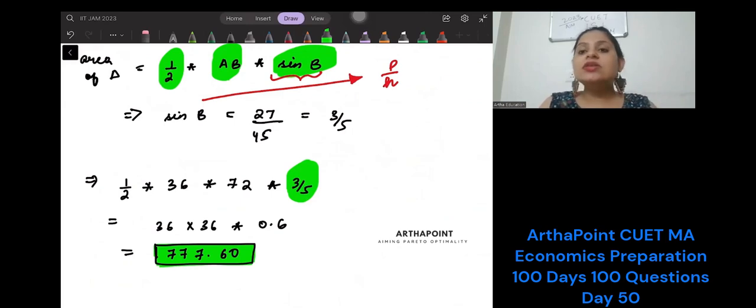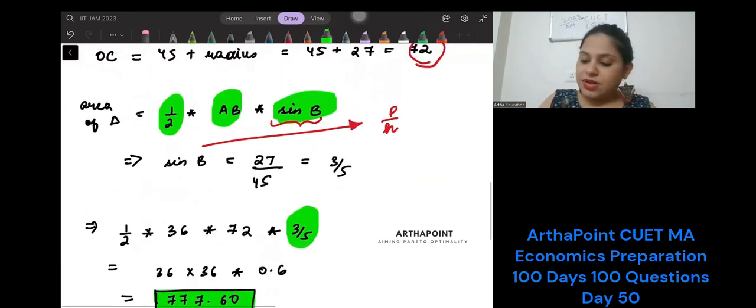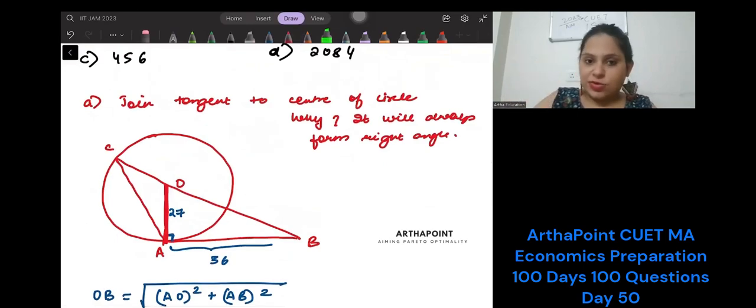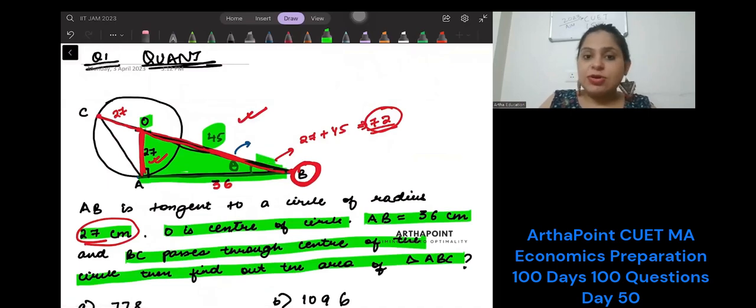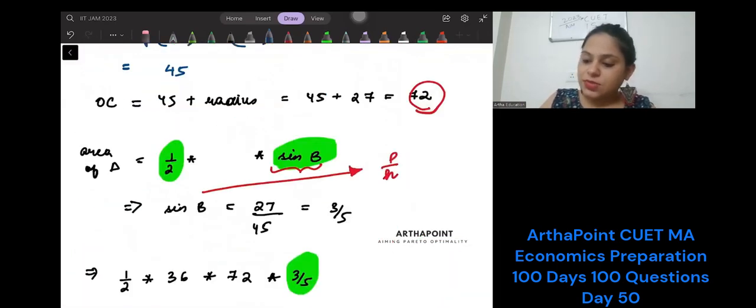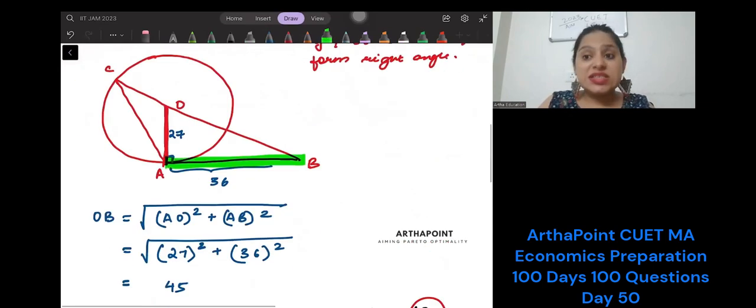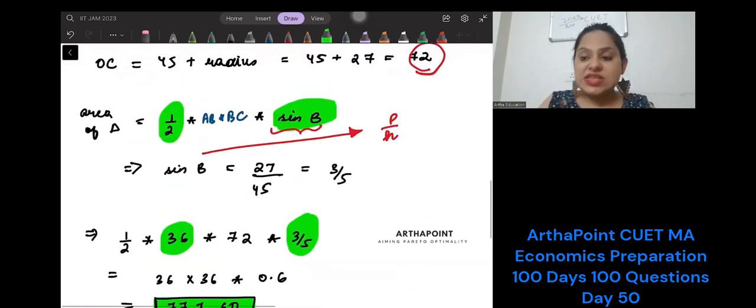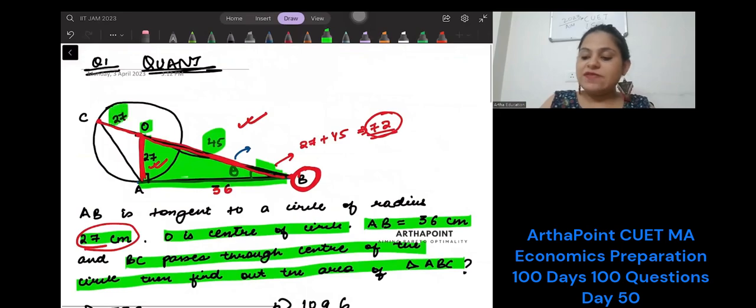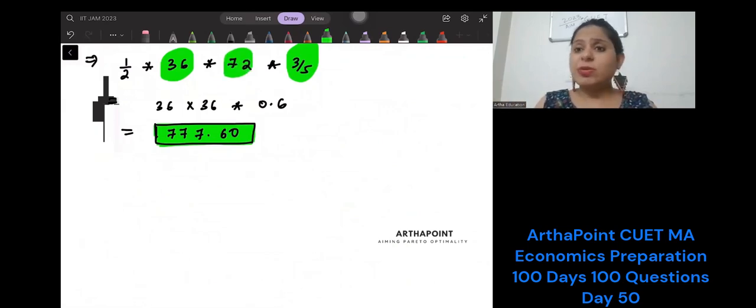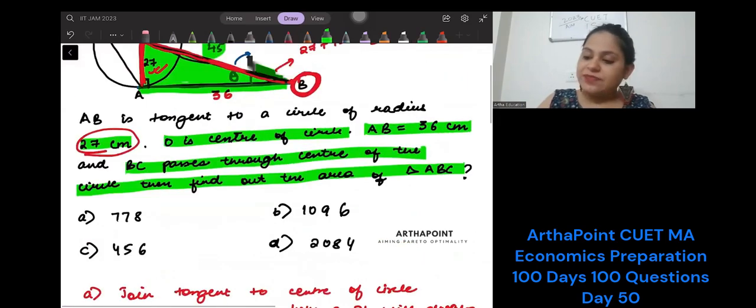So the area of this triangle is going to be half. The two sides that I know are AB and BC, so it's AB into BC into sin B. AB that I have found out is 36. The BC I found out is 72. Sin B is 3 by 5. So my area will be this, and that would be 777.60. So approximately the area of this triangle will be 778. This is the answer to your question.